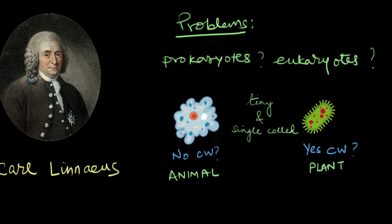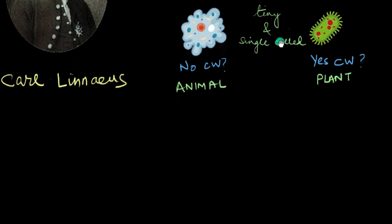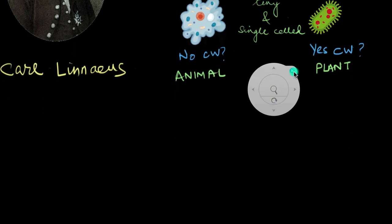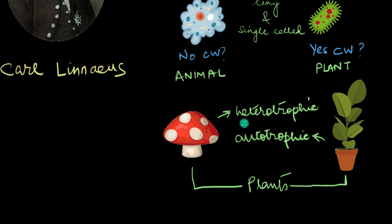Yet another feature that didn't make any sense was the mode of nutrition. Fungi are exclusively heterotrophic organisms. In the two kingdom system, they were placed with plants, which are strict autotrophs. So it doesn't make any sense to place fungi and plants together in the same group.